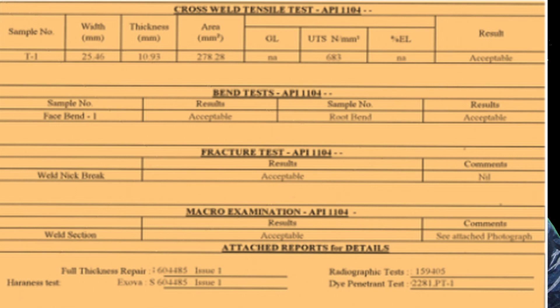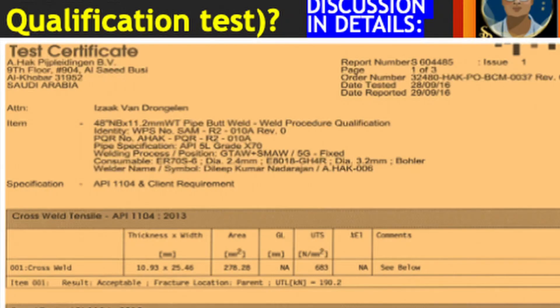These are the test results mentioned in tabular format. You can see the cross-weld tensile test as per API 1104 — so this PQR is qualified as per API 1104. Then there is the bend test report, followed by the fracture test, and then macro examination.